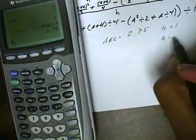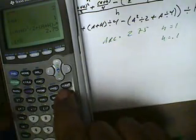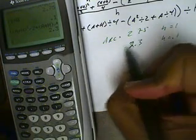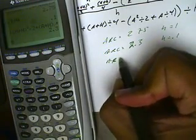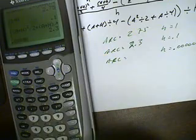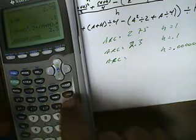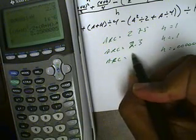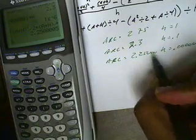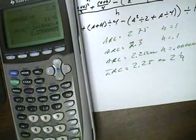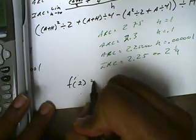For h equals 0.1, I store 0.1 into alpha H, redo the problem, and I get 2.3 for my average rate of change. Then I try h equals 0.00001 and store that into alpha H. This time I get 2.25. I want to assume that my instantaneous rate of change must be 2.25, or 2 and one-fourth. So we conclude that the derivative of the function at 2 will be 2 and one-fourth.